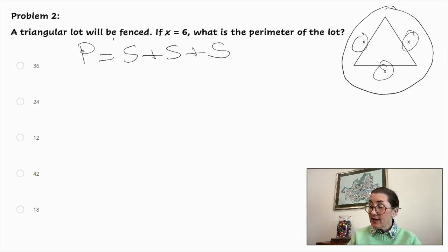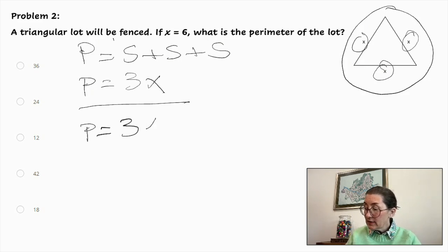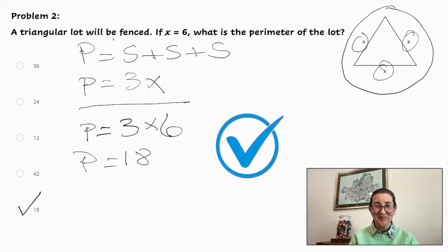And the formula for the perimeter is side plus side plus side. As these are all the same, we can put 3X as the formula. So P equals 3 times 6, which means the perimeter is 18. So the answer is there, 18.